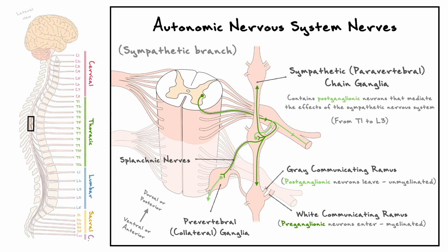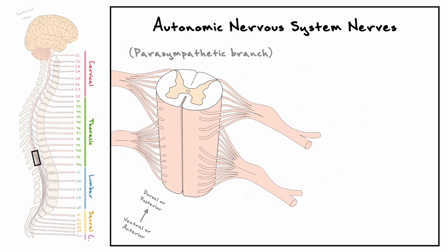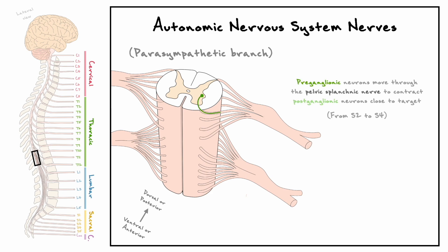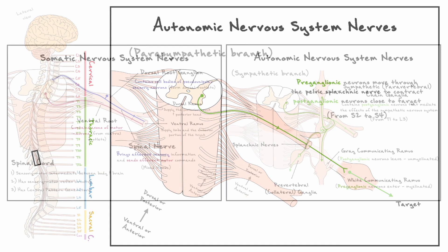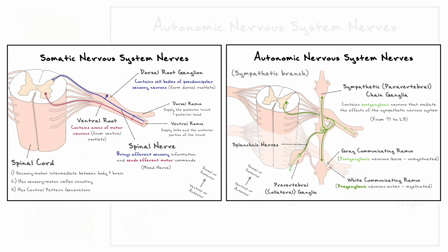The gray communicating ramus is unmyelinated and thus appears darker in imaging studies when compared to the white communicating ramus. Because of the chain-like structure of these ganglions, the preganglionic fibers have the possibility to move up and down this sympathetic trunk to synapse at postganglionic neurons responsible for different segments. Preganglionic fibers also have the capacity to continue their journey through nerves called splanchnic nerves and reach more distant ganglions called prevertebral or collateral ganglions. This structure is simply for the sympathetic nervous system; the parasympathetic nervous system uses different pathways to reach its targets. The segments S2 to S4 in the spinal cord have preganglionic fibers that leave the ventral root and by way of the pelvic splanchnic nerve, reach their postganglionic target.